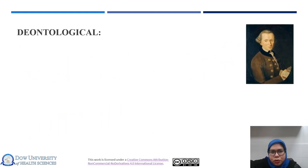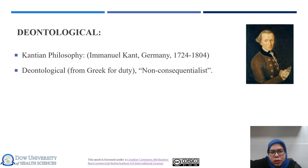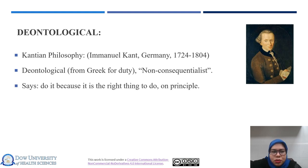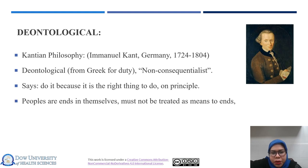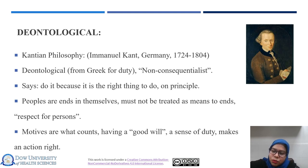The second theory is the deontological approach, also known as Kantian philosophy, from Immanuel Kant of Germany, 1724 to 1804. Deontology, from the Greek word meaning duty, is a non-consequentialist theory that says to act because it is the right thing to do on principle. People are ends in themselves and must not be treated as means to ends. The basic purpose of this theory is respect for persons, and motives — having a good will and a sense of duty — are what counts. Deontological ethics tells us that certain actions are inherently right or wrong, regardless of their consequences.